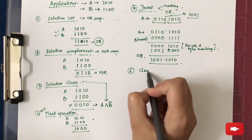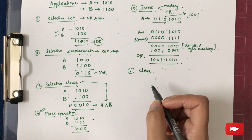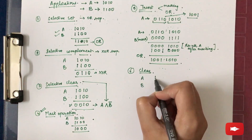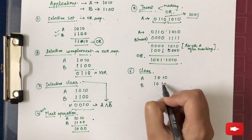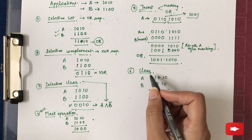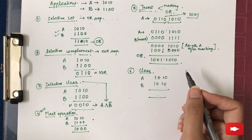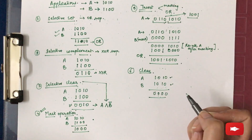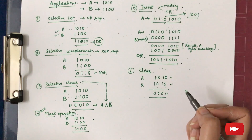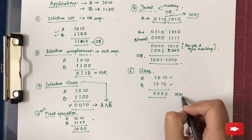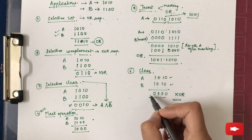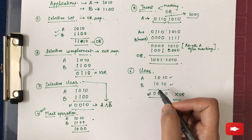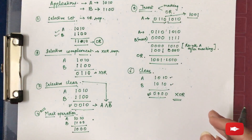The sixth application is the clear operation. If registers A and B have the same values, the clear micro-operation produces all zeros. This is achieved using the XOR micro-operation — if the result of XOR is all zeros, it indicates that the two numbers are equal. This concludes the application part of logic micro-operations.